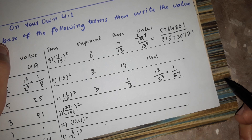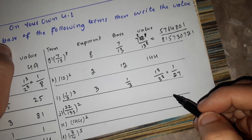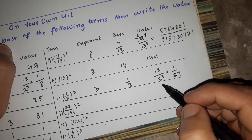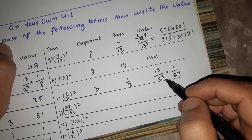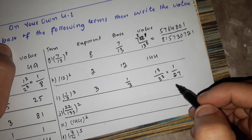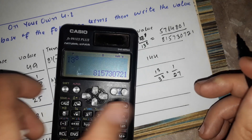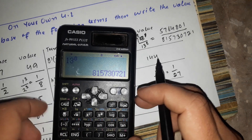If you have 3 multiplied by 3 multiplied by 3, that is 3 to the power of 3, which equals 27.